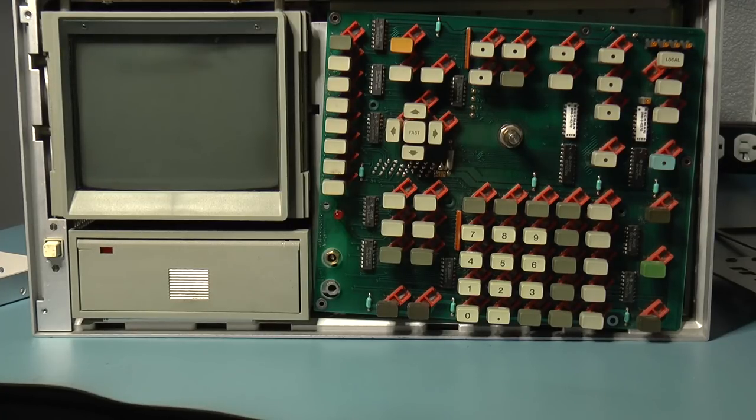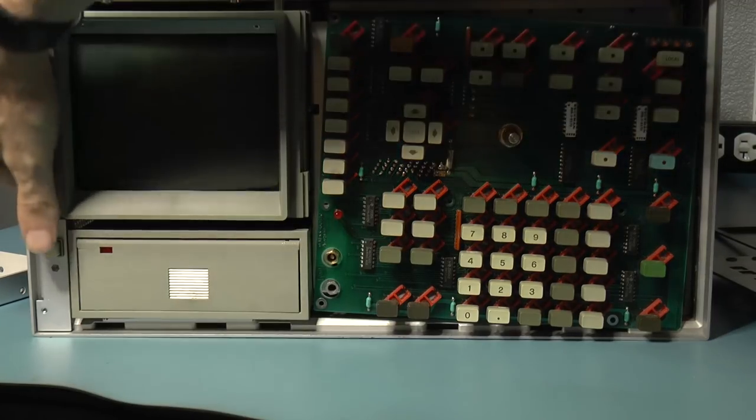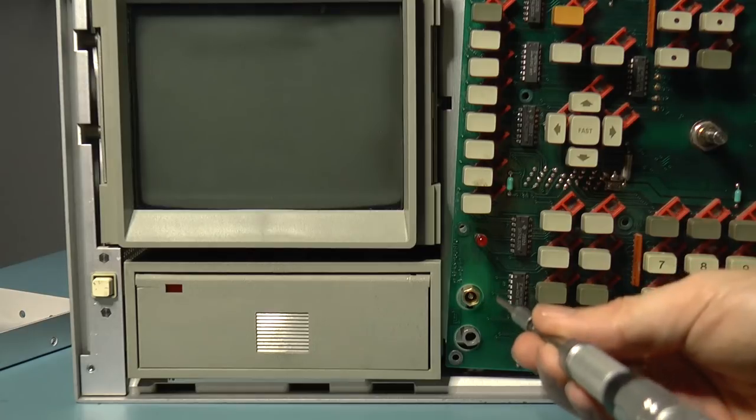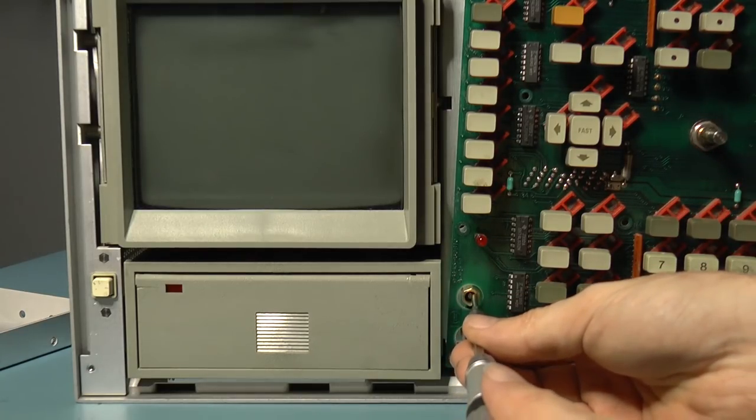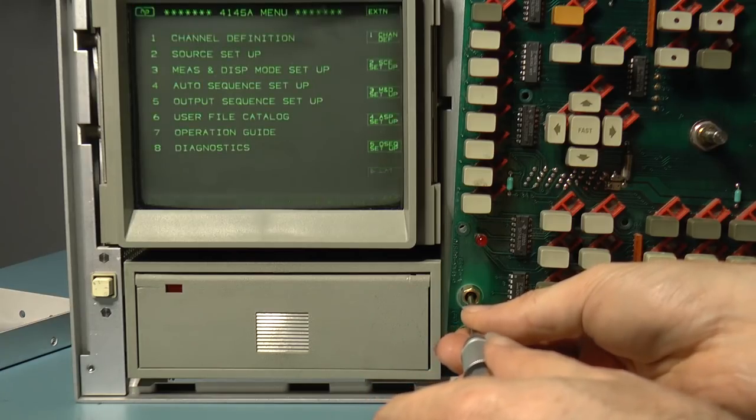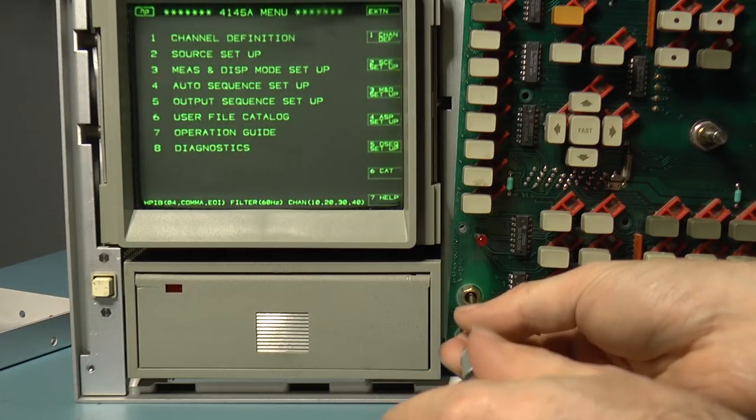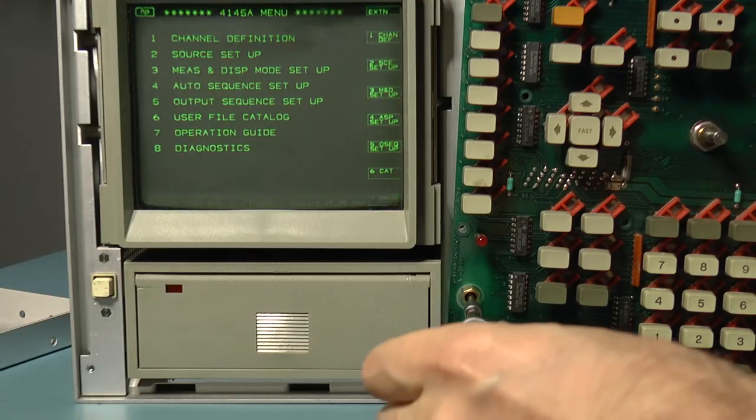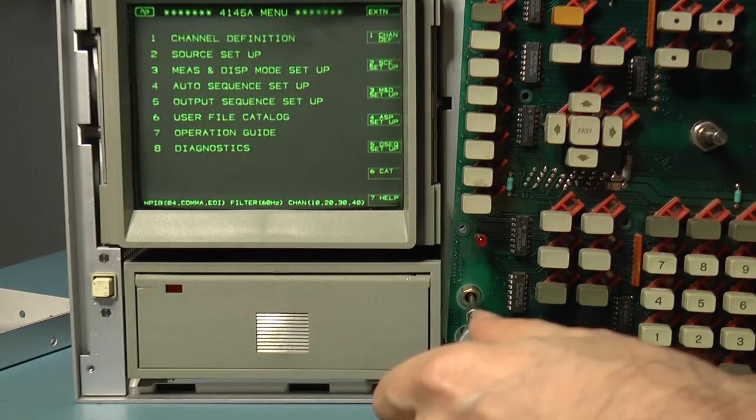Let's turn it on and see if I can adjust the intensity and not have it cut in and out. So it looks like we have a blank screen, but if I adjust the knob... Aha, there we go. Now I can adjust the intensity quite nicely, and there's no cutting in and out.